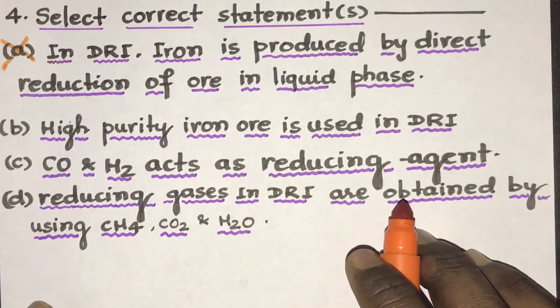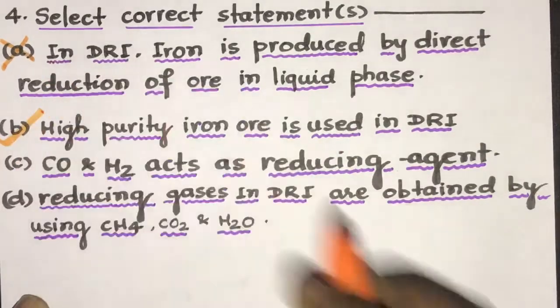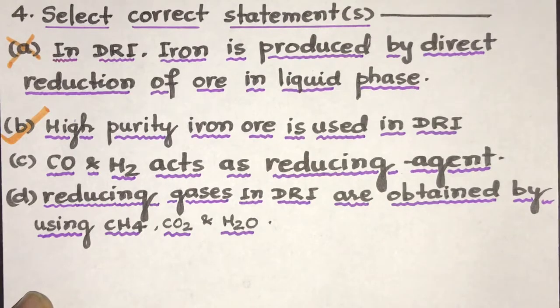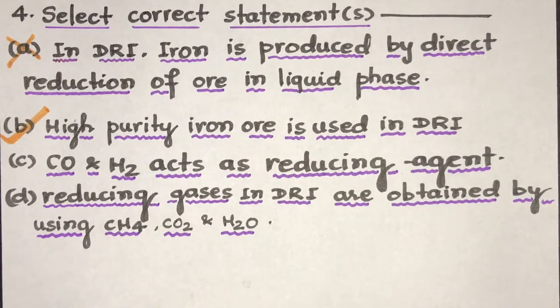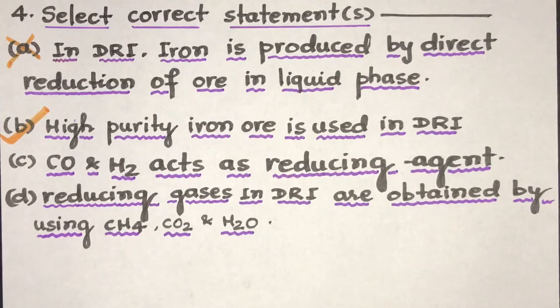High purity iron ore is used in DRI. This is absolutely correct. Because we are making iron in solid state. So we are making the iron directly from the ore, without any roasting or calcination. So in that case, we must have iron ore with very high purity. Otherwise, the produced iron will have a lot of impurities in it.